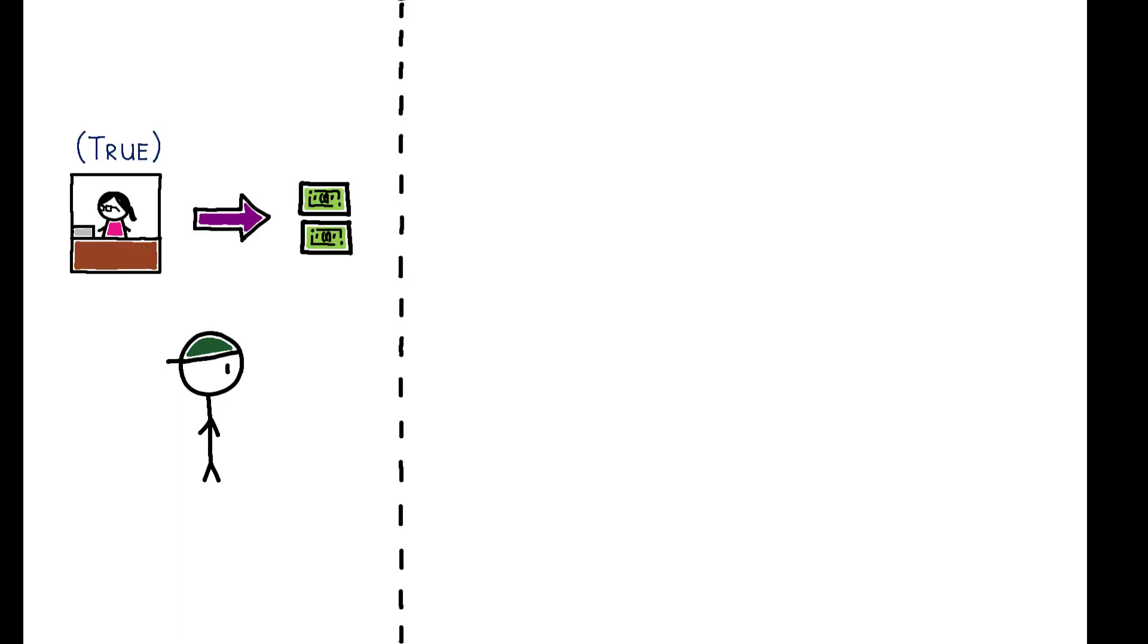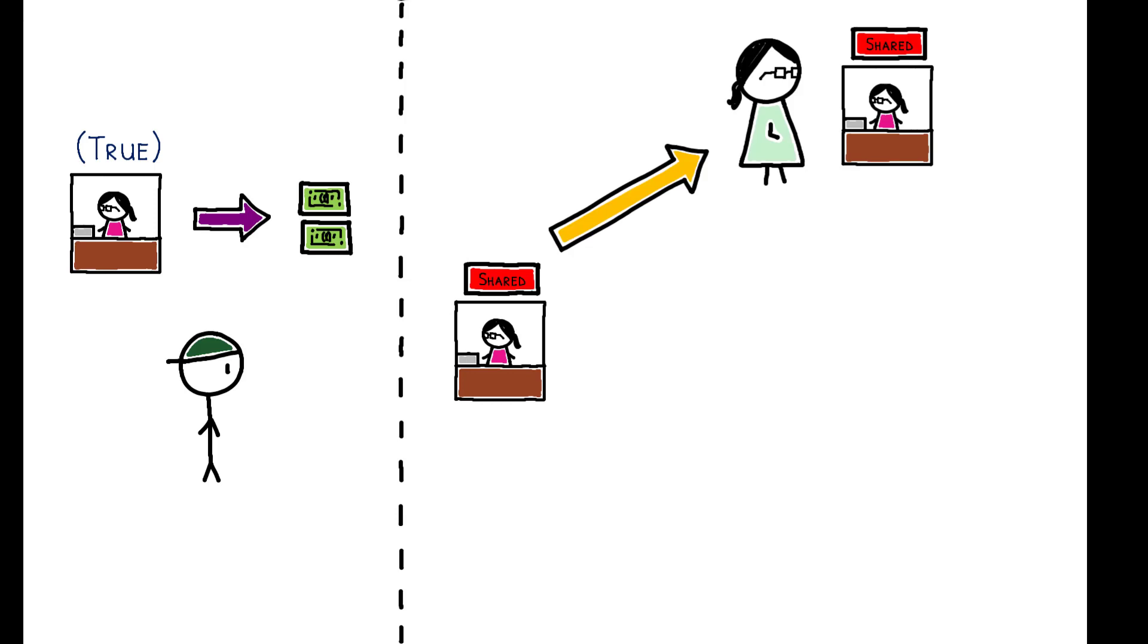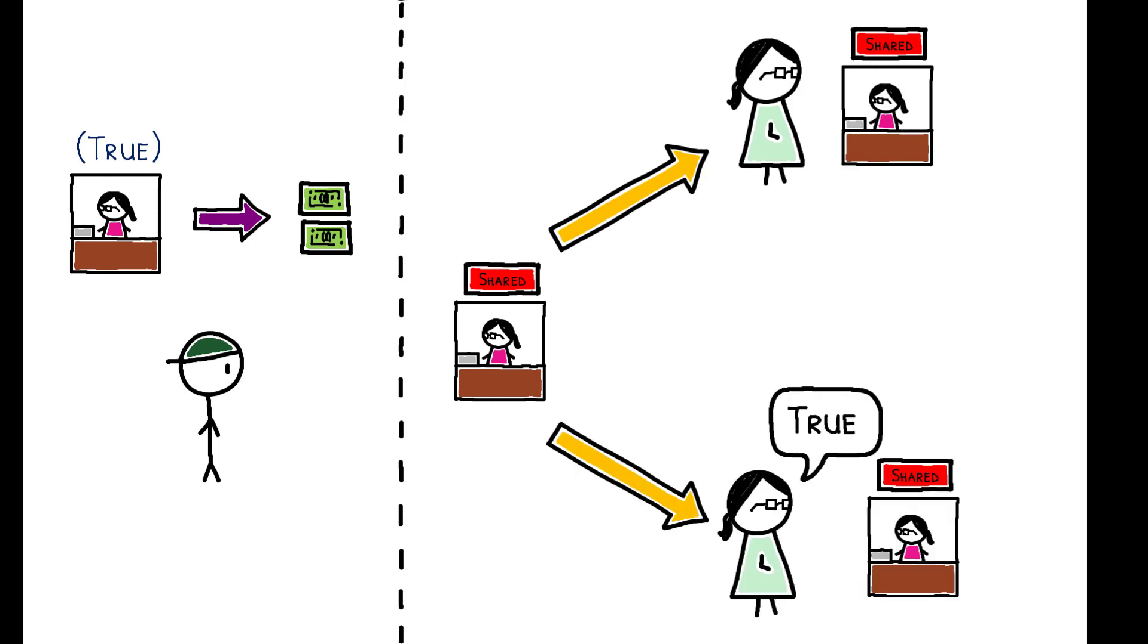At the same time, shared videos were also trusted more. When R1 was incentivized to share a truthful video, knowing that a video was shared increased the probability that R2 would watch it and believe it to be true.